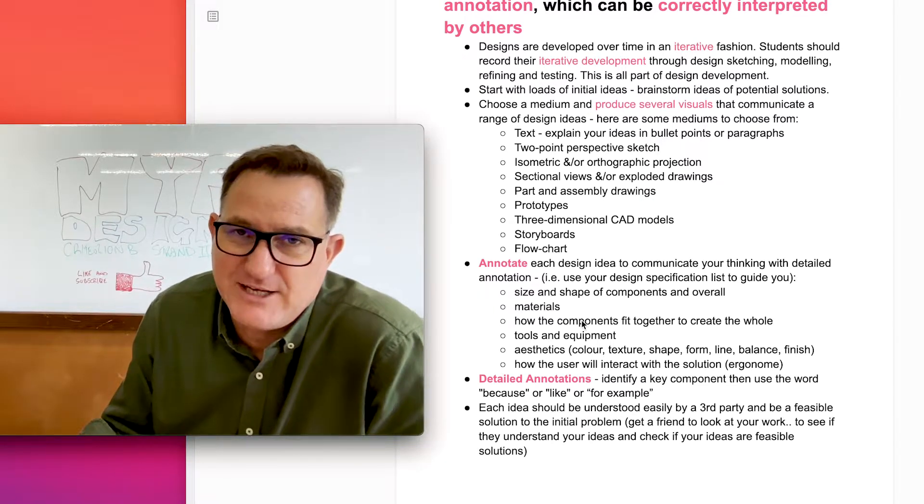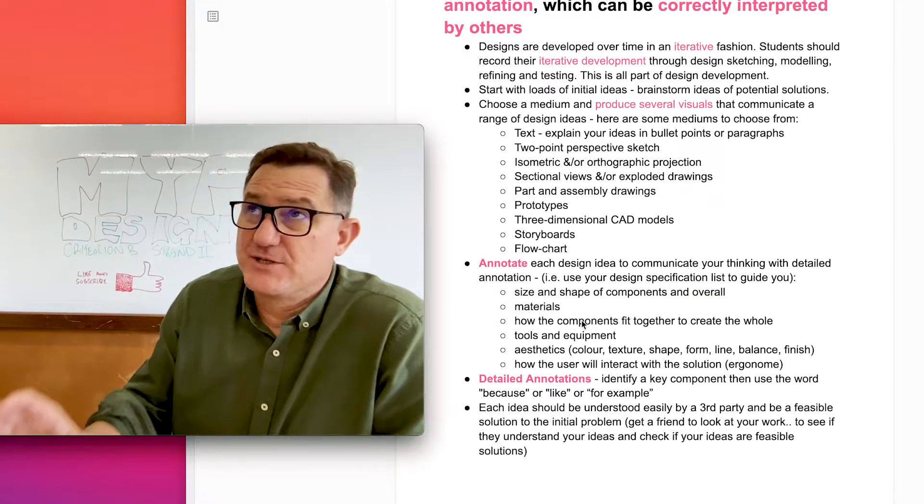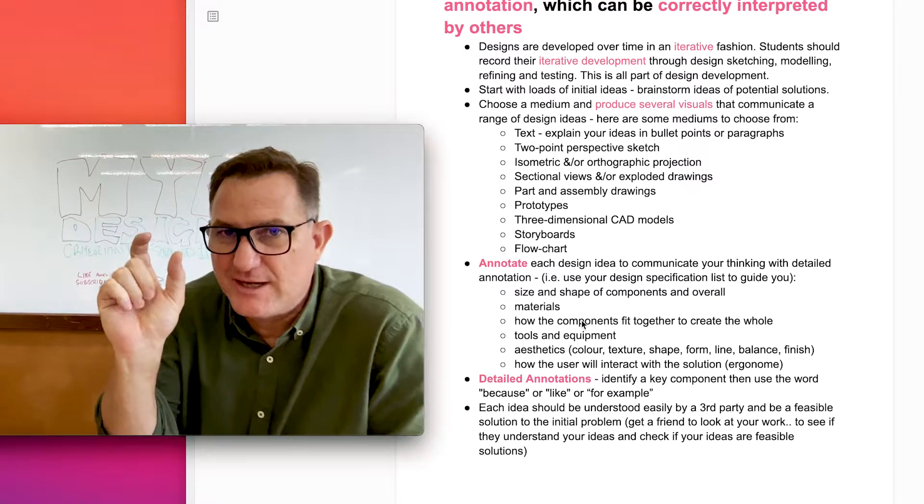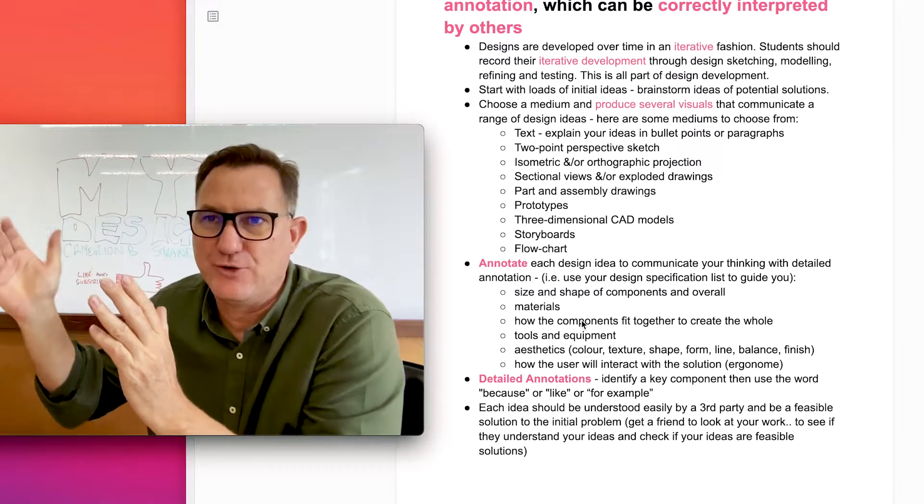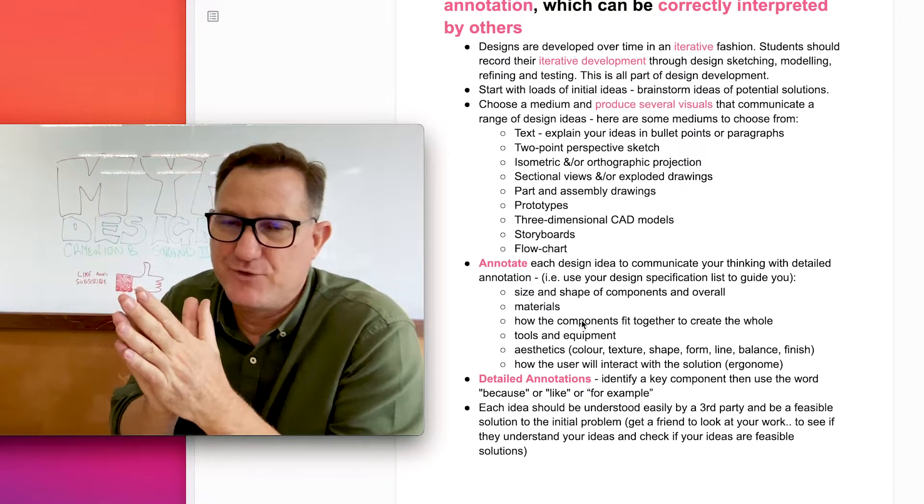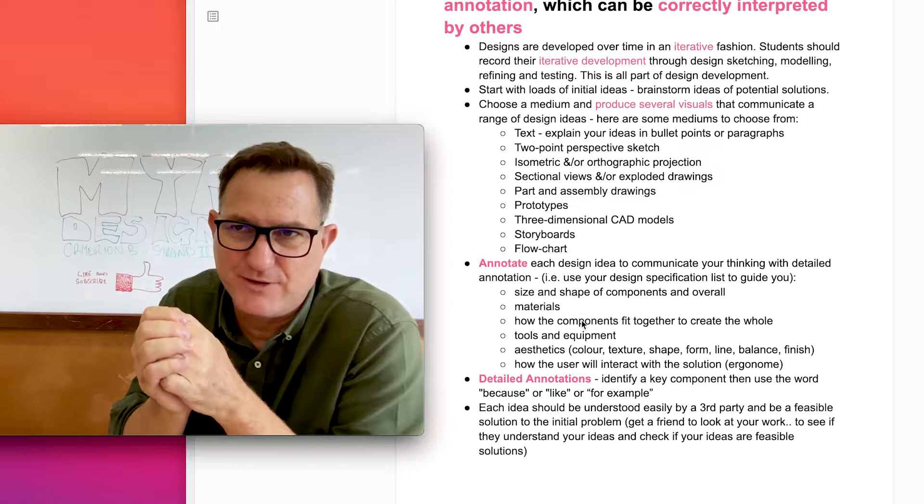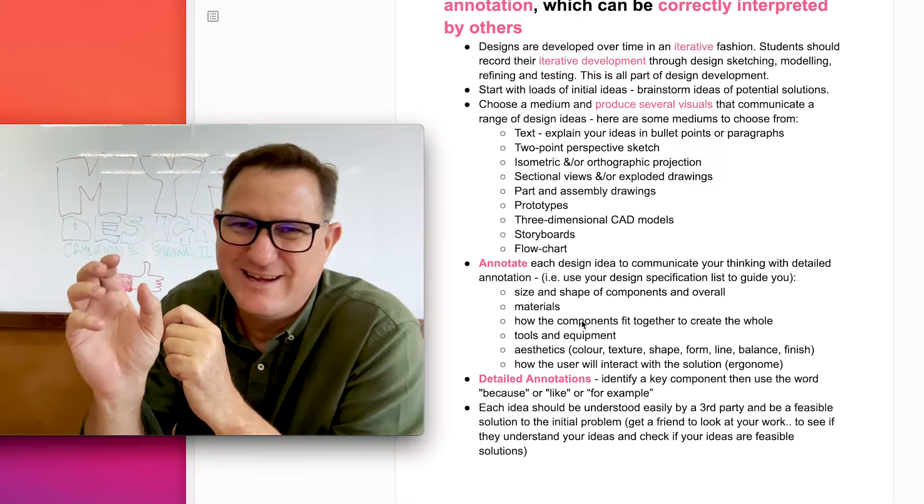Top marks also need detailed annotation. The easiest way to do that is identify a feature and then expand on it or explain it or justify it. As I mentioned with the colour example, this will be blue. That's not detailed.